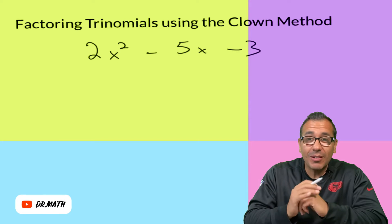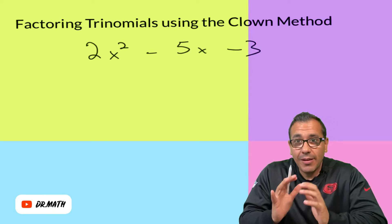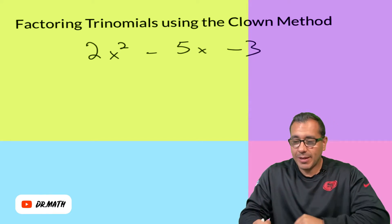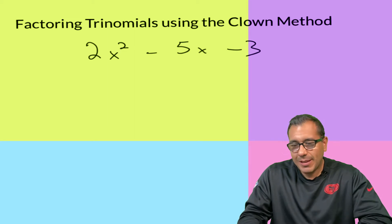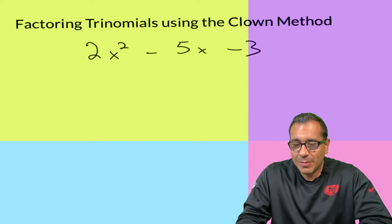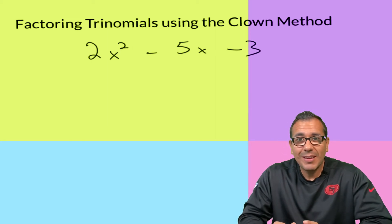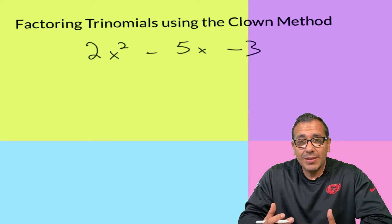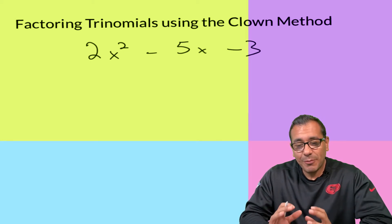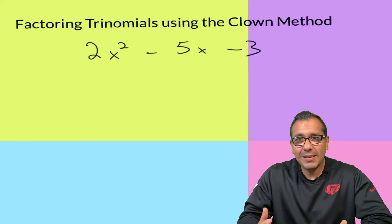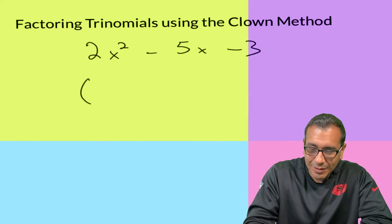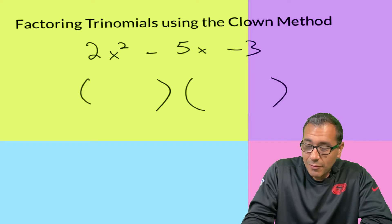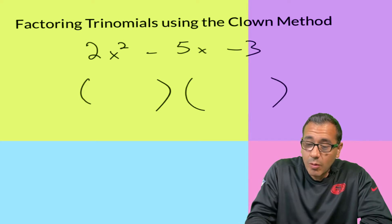All right folks, here is the clown method. It's not really its own method — it's more like the trial and error method. The reason people call it the clown method is because the way we set it up, when you take a step back, it kind of looks like a clown.